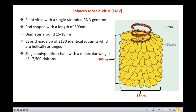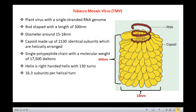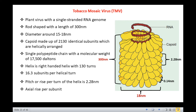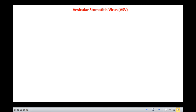The overall structure of TMV is a hollow tube with the genomic RNA attached to the internal face of the tube, with three nucleotides held in the cleft of each capsid subunit. The helix is a right-handed helix with 130 turns and around 16.3 subunits per helical turn. The pitch per turn of the helix is 2.28 nanometers and the axial rise per subunit is 0.14 nanometers. Each subunit engages in the same interactions with its neighbors and each binds to three nucleotides in the RNA.